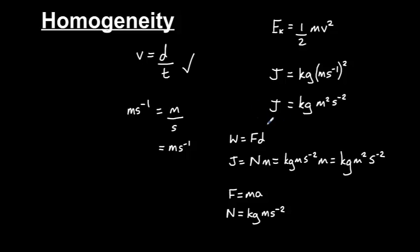Finally, we can put our joule back into this equation up here. Kilogram metres squared seconds to the minus 2 is equal to kilogram metres squared seconds to the minus 2. So both sides match. And this equation is also homogeneous.